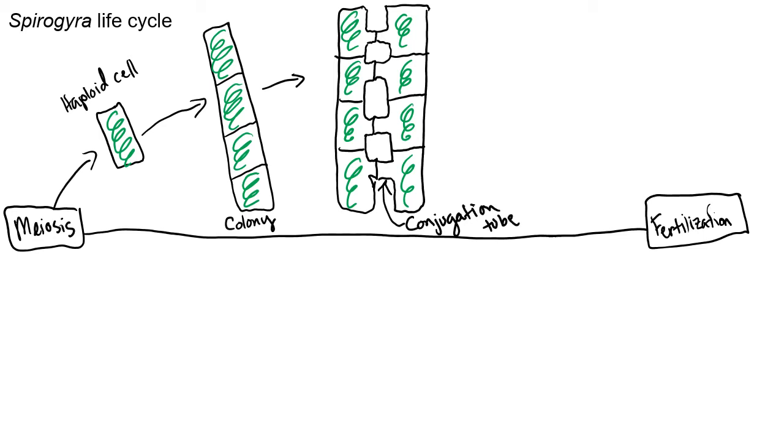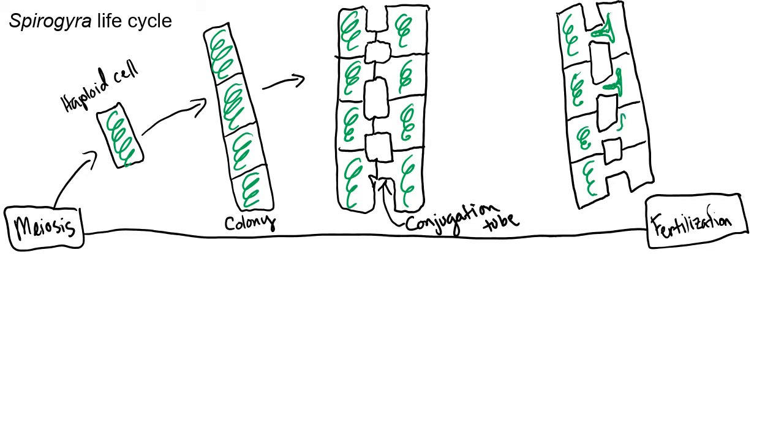So that tube is called a conjugation tube. When they form, one of those colonies, and I don't know if it always has to be just from one side to the other, but the contents from this one on the right is going to start to get deposited into the one on the left. So all of the cellular contents from this one colony is getting deposited through the conjugation tube into the cells of this other colony. And that is when fertilization is going to happen.